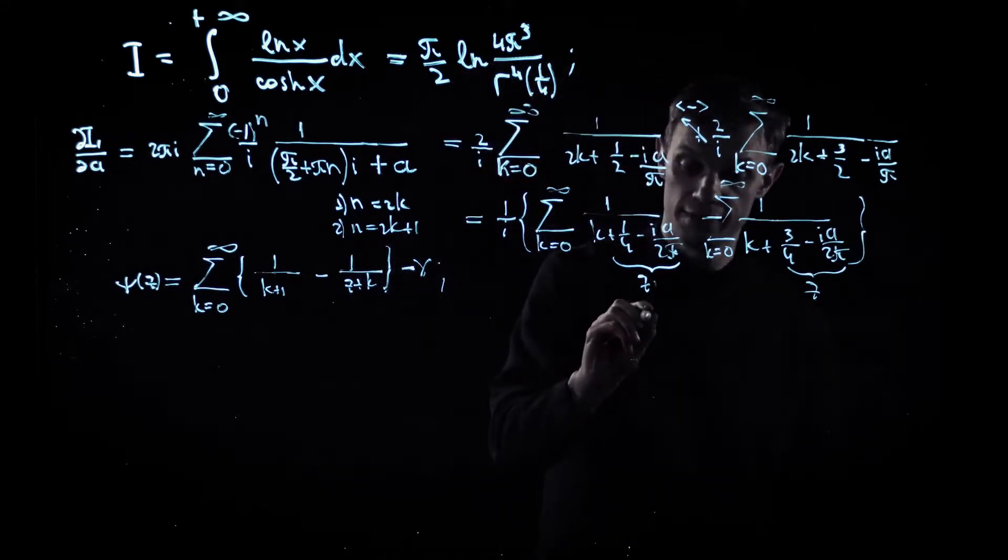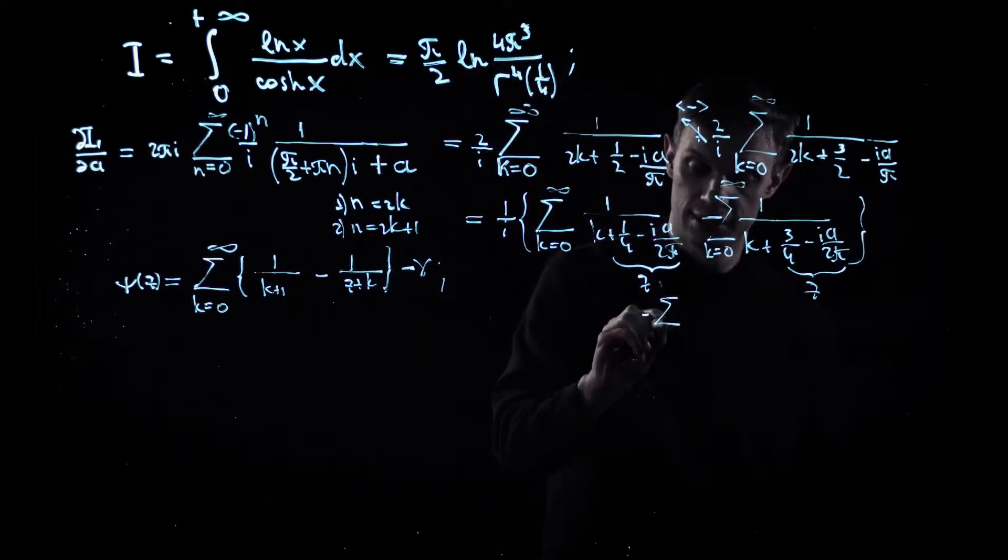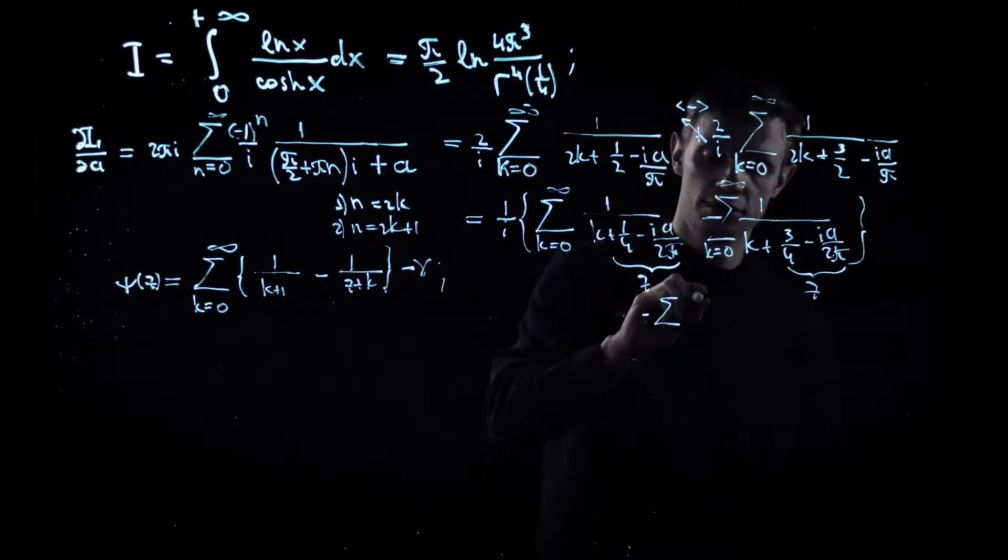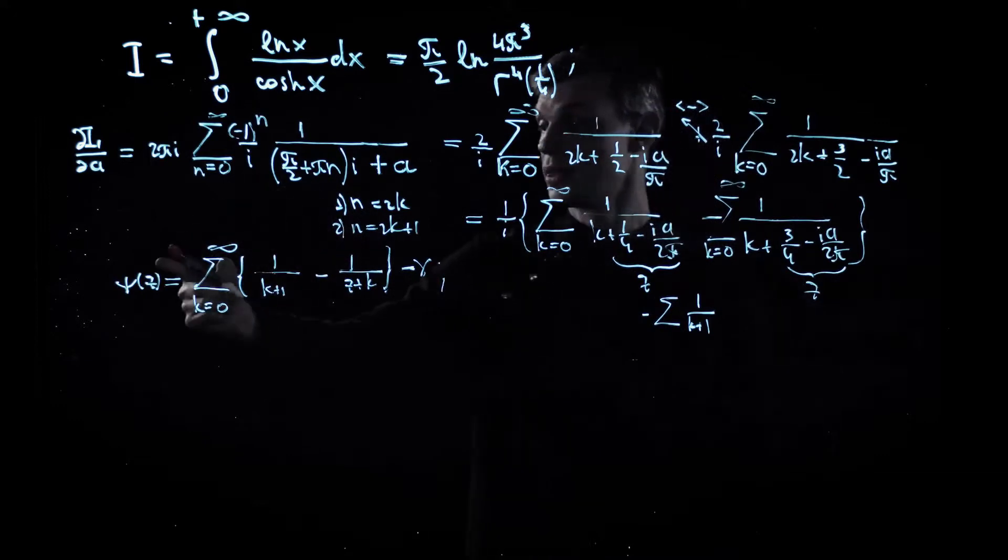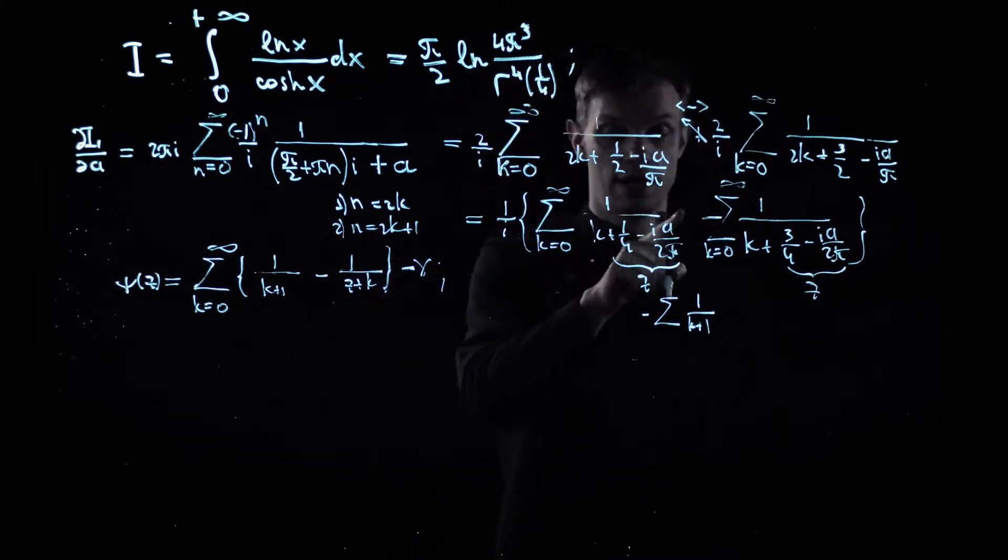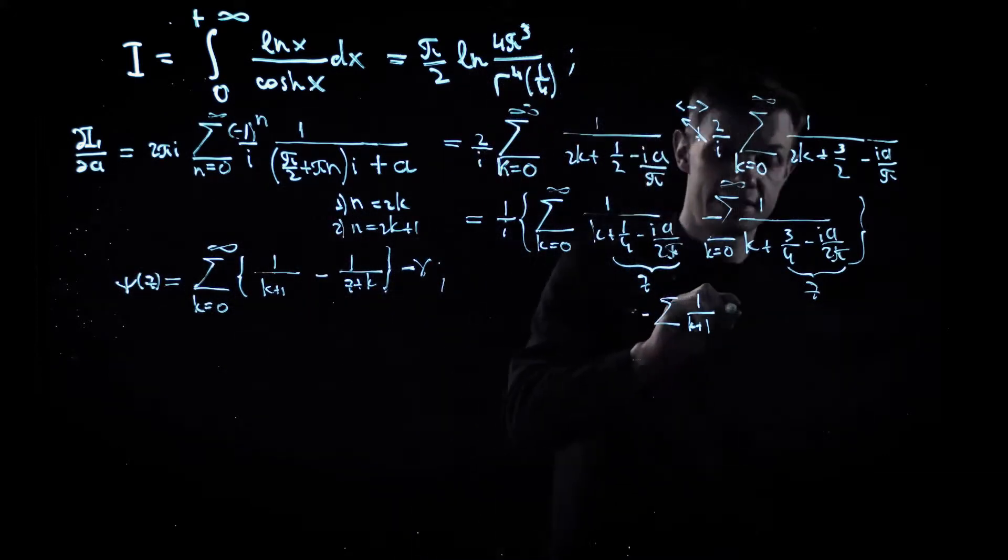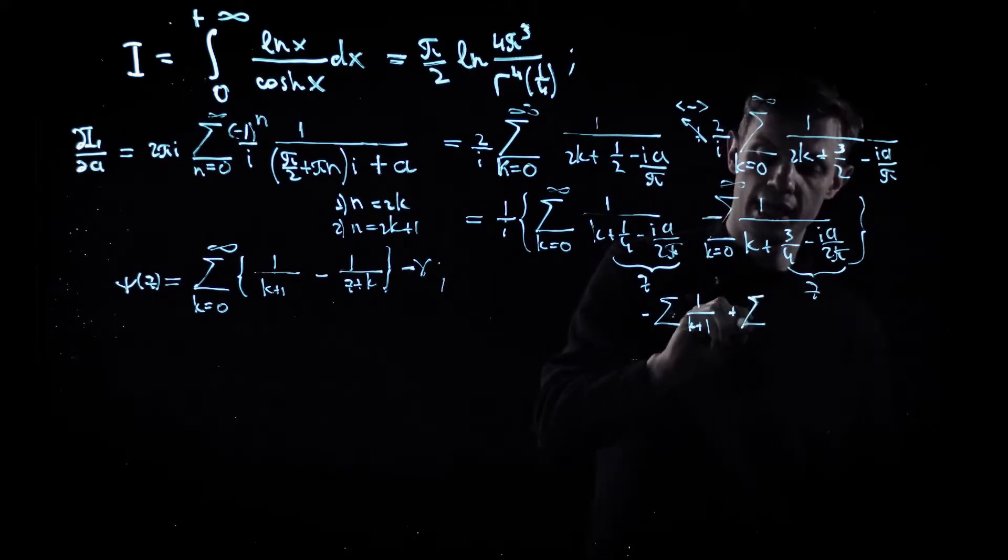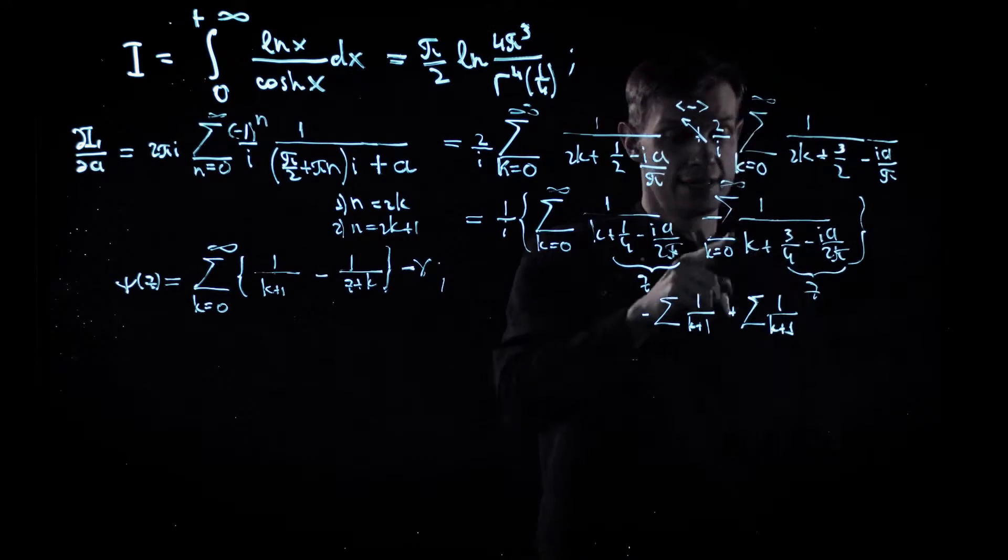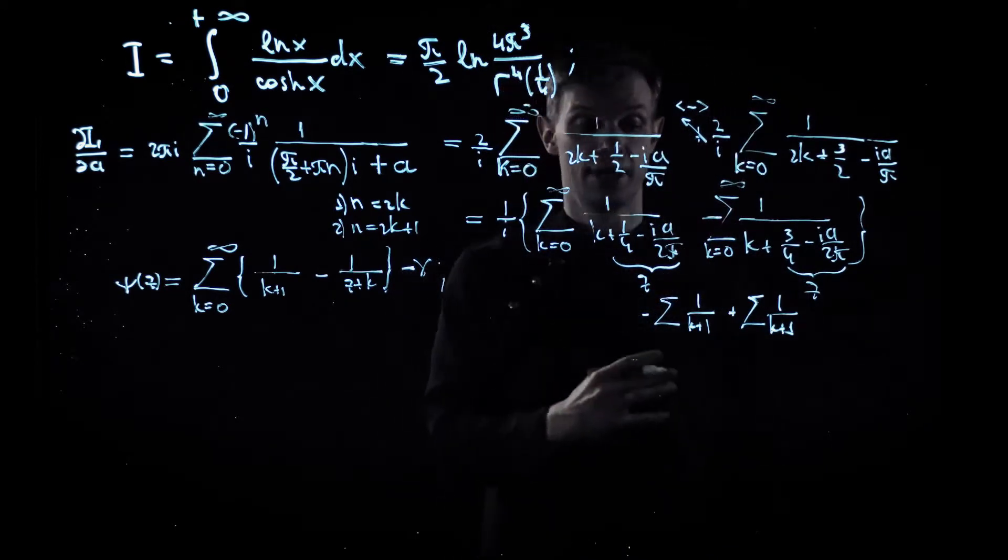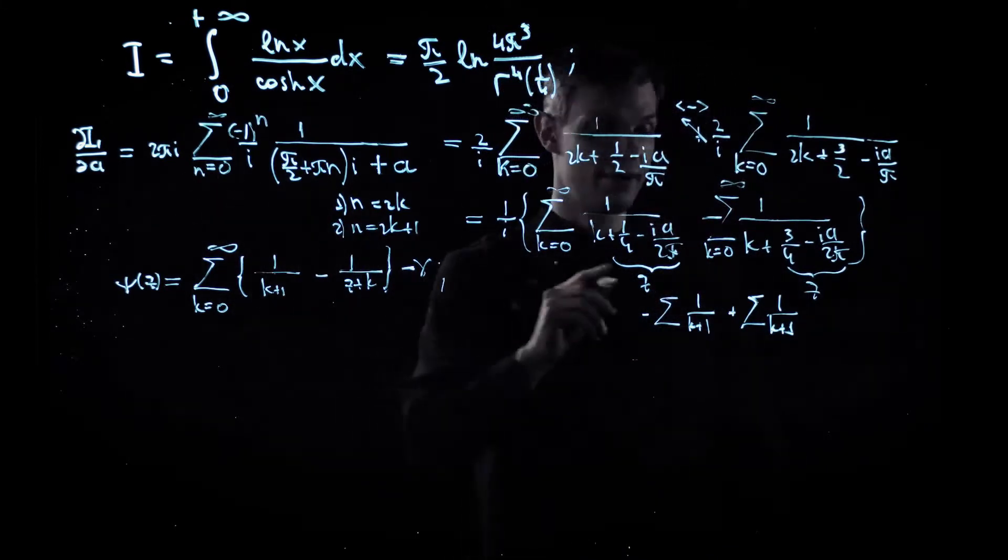Indeed, because we can subtract here the suitable one over k plus one term and reduce the first term to the psi function of this argument, and we can add the same combination to group it with the second sum and to end up with the digamma function of the second argument.